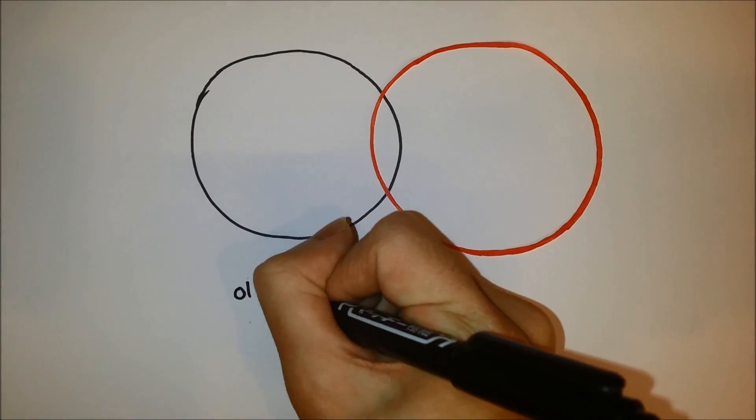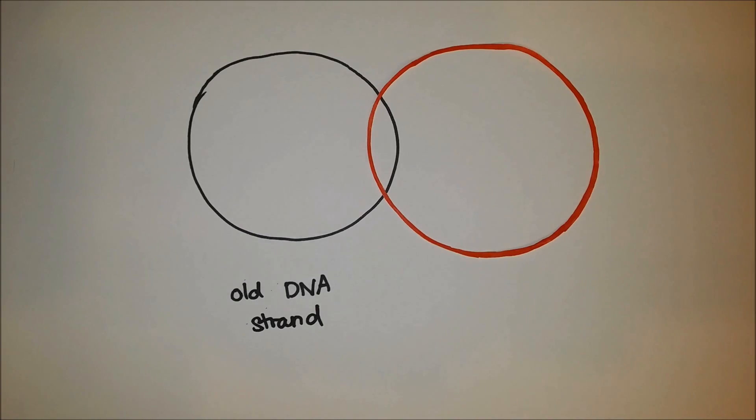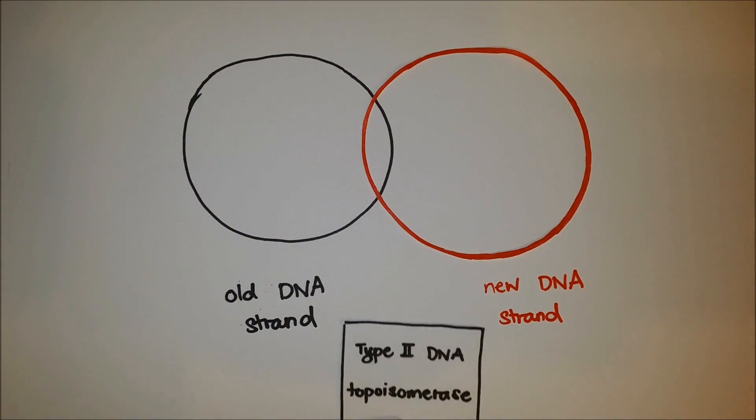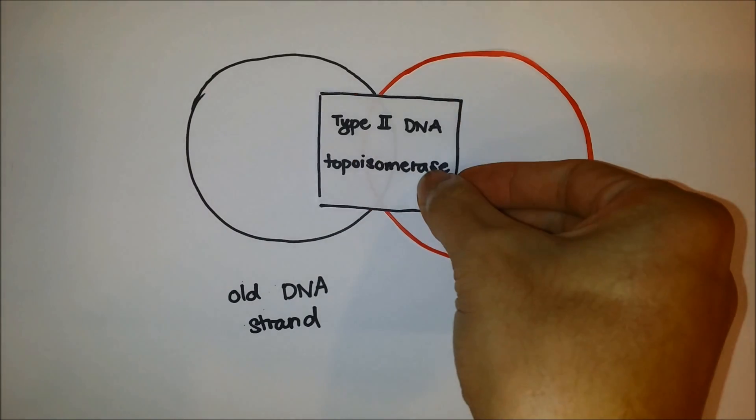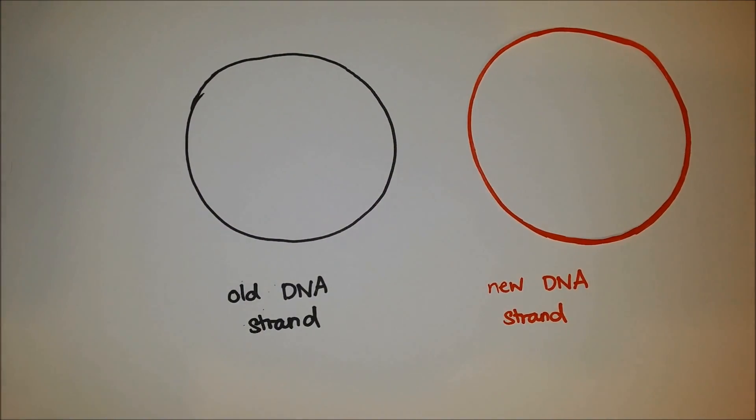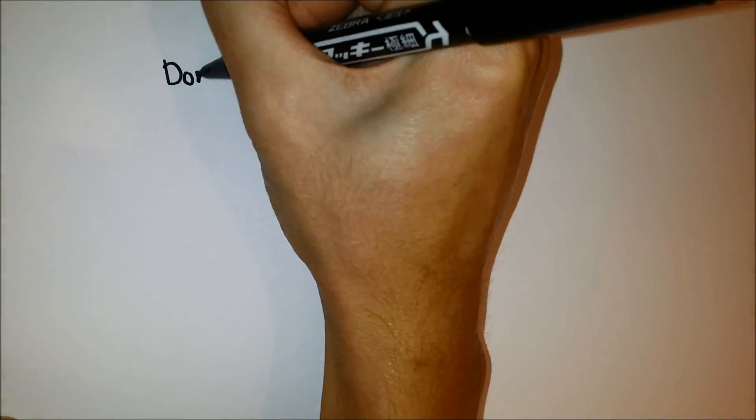In order to separate the old circular DNA strand from the new circular DNA strand, type 2 DNA topoisomerase, also known as DNA gyrase in E. coli, breaks both polynucleotides to separate them.